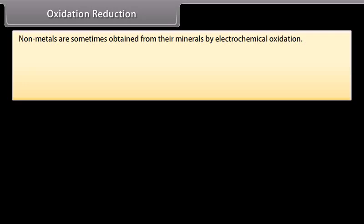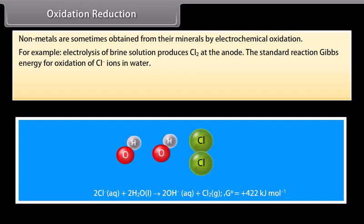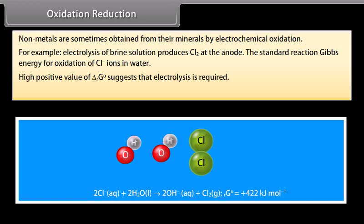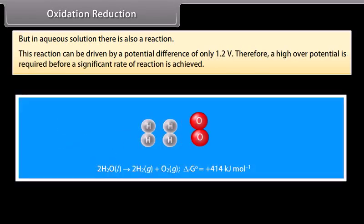Oxidation reduction. Non-metals are sometimes obtained from their minerals by electrochemical oxidation. For example, electrolysis of brine solution produces Cl2 at the anode. The standard reaction gives energy for oxidation of Cl- ions in water. High positive value suggests that electrolysis is required. The minimum potential difference that can achieve oxidation of Cl- ions is about 2.2V and n = 2. But in aqueous solution there is also a reaction. This reaction can be driven by a potential difference of only 1.2V. Therefore, a high overall potential is required before a significant rate of reaction is achieved.